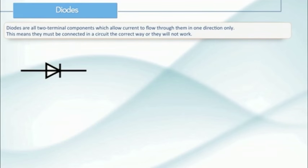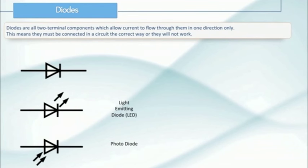Diodes are all two terminal components, which mean they have two legs which we can connect to in a circuit. They only allow current to flow through them in one direction. This means you have to connect them in a circuit the right way around or they won't work. Here's some diode symbols. The top is an ordinary diode. The middle one is a light emitting diode or an LED. And the bottom one is a photodiode. We'll talk about what those arrows mean in a moment.